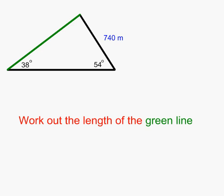This is the first example of four examples. In our question we are given a triangle. We are told the length of one of the sides, 740 meters, and we are given two of the angles: 38 degrees and 54 degrees.